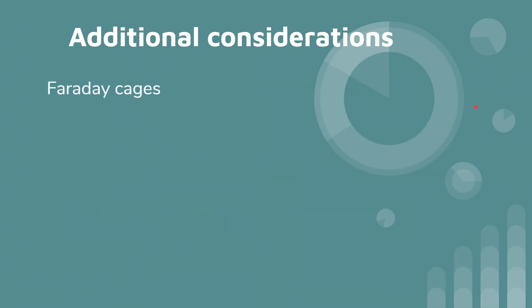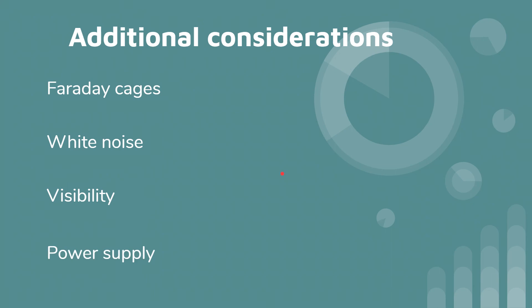We also have things like Faraday cages — essentially a giant metal box that prevents electromagnetic signals from coming in or going out. You have white noise machines that can prevent eavesdroppers or people with microphones from listening in on what's happening inside a building. Then you have visibility considerations: is your data displayed on a screen that faces a window pointing to the street? Can the public see inside and have visibility into your systems and operations? And you also want to consider things like power supply — uninterruptible power supplies, power generators, and so forth.